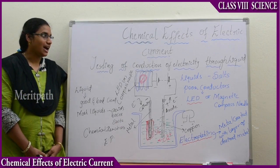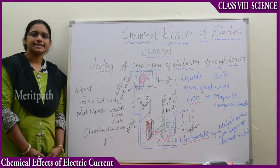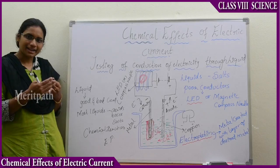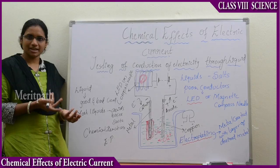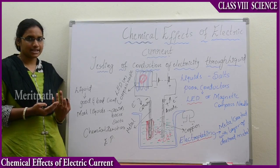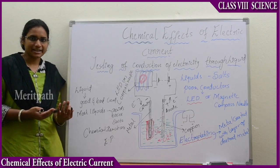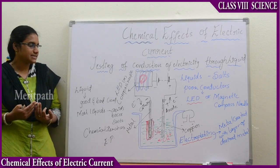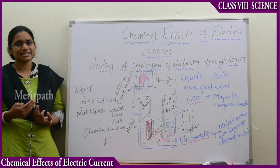Let us discuss the other chemical effects of electric current. What do you mean by chemical effects of electric current? It is nothing but the chemical reactions which are taking place by the conductors which are in liquids. We have studied previously that liquids also conduct electricity. There are different types of liquids — for example, poor conductors and bad conductors of liquids.